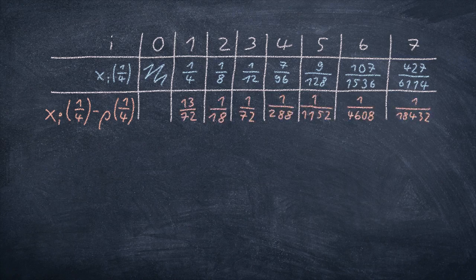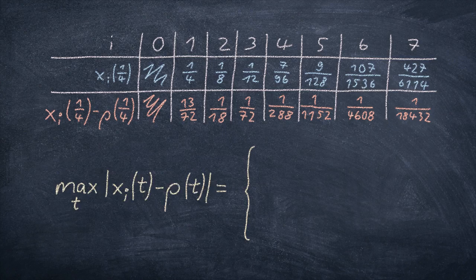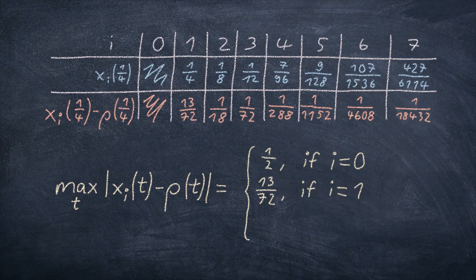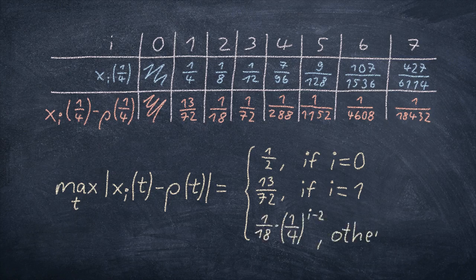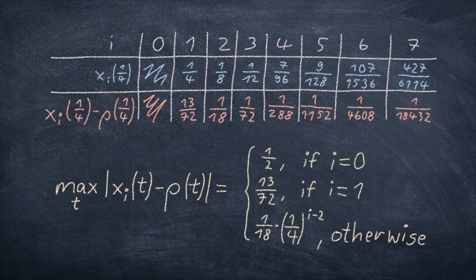Anyway, here's the difference between them and 5 over 72. So the maximum error of the approximation comes down to a half in the zeroth iteration, 13 over 72 in the first iteration, as we saw on the previous sketch, and from then on it can be computed by this nice formula, which is a consequence of how we computed rho of a quarter before. That means, the error shrinks by a factor of 4 with every iteration. This means we can now compute rho exactly as exact as we need it.